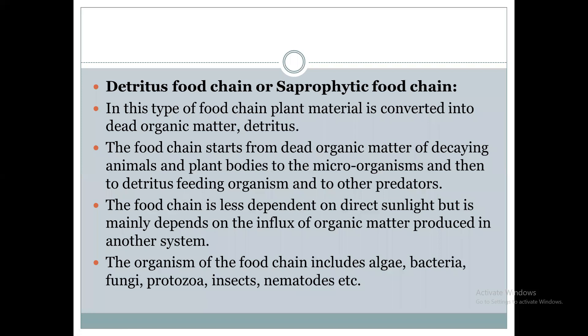This food chain is less dependent upon sunlight and light, but it mainly depends on the influx of organic matter produced in another system. This system is less dependent upon solar energy or sunlight; it mainly depends upon the organic matter which is produced in another system.